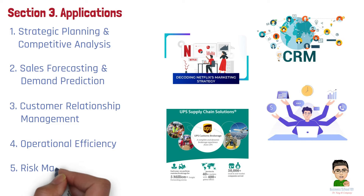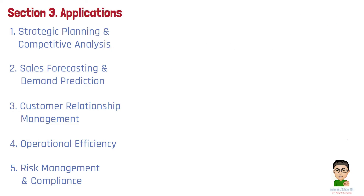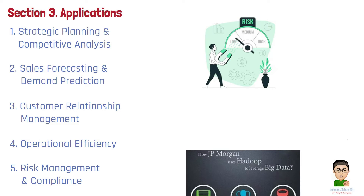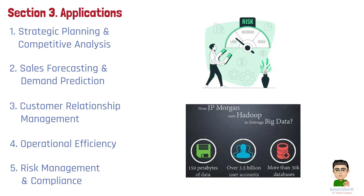Number 5: Risk management and compliance. Data analytics helps managers identify and mitigate risks such as fraud or regulatory issues, ensuring compliance and protecting the business from potential financial losses and reputational harm. For example, JPMorgan Chase employs data analytics to detect fraud by analyzing transaction patterns, quickly responding to anomalies to protect customers and minimize losses.